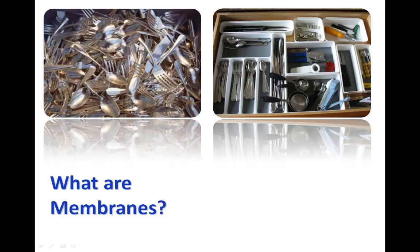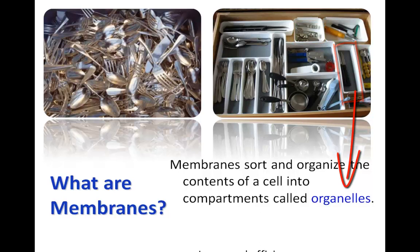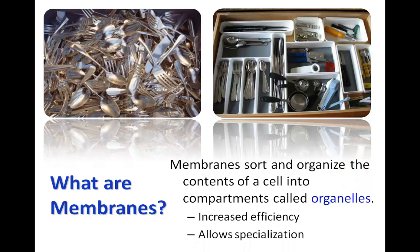You're also going to hear a lot of mention about membranes, so it would be fitting if we started with an explanation of what a membrane does and how it functions in the cell. Take a look at the diagram above. We've got two different drawers. Which drawer is likely to provide the best access to very specific contents? If you said the drawer on the right, you're absolutely correct. In fact, much like the dividers in that drawer, membranes sort and organize the contents of a cell into compartments, which we call organelles. The result of this is that the organelle has higher efficiency and can become specialized, making the cell more efficient and specialized as well.